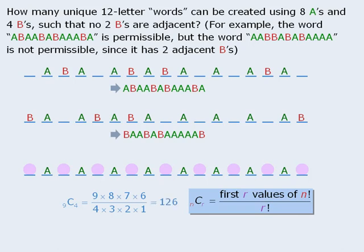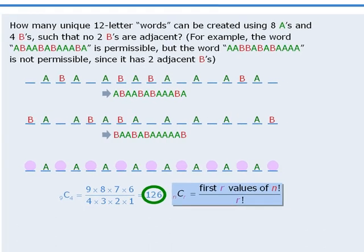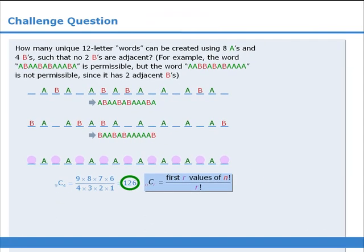When we simplify this, we get 126, so there are 126 unique 12-letter words that can be created using eight As and four Bs, such that no two Bs are adjacent.